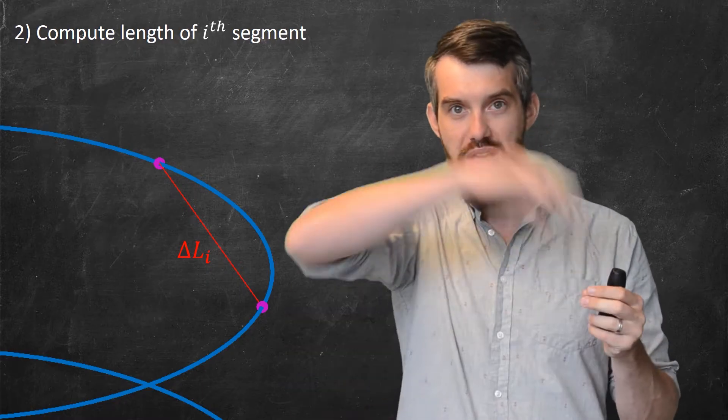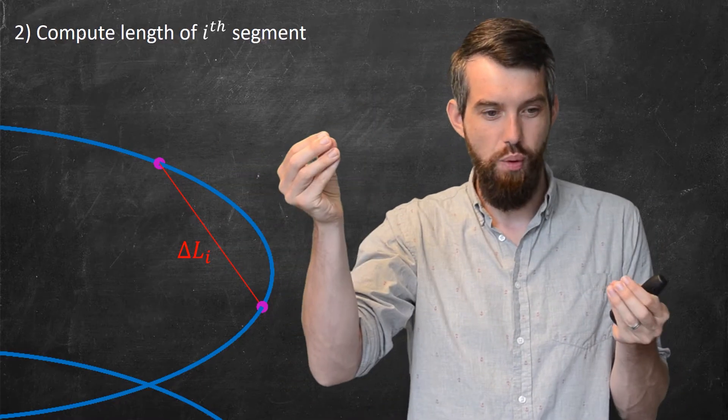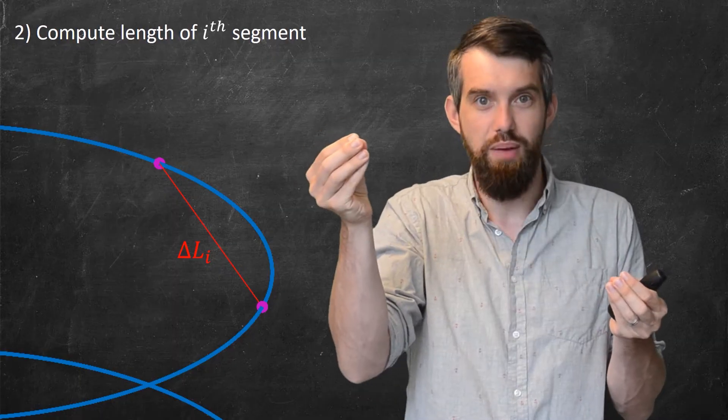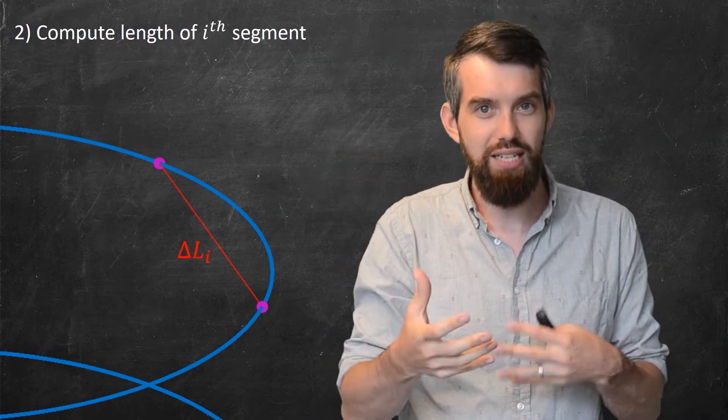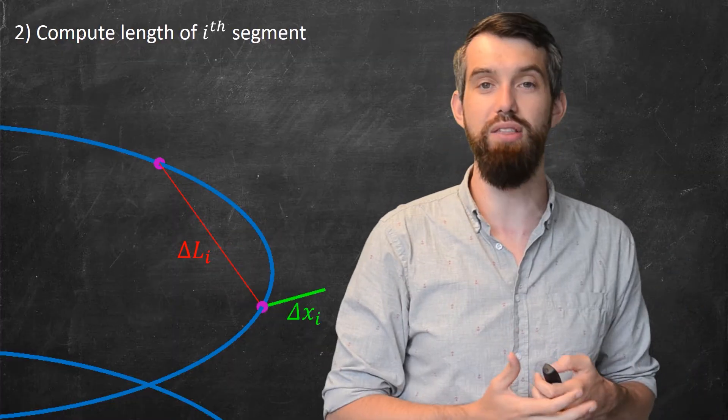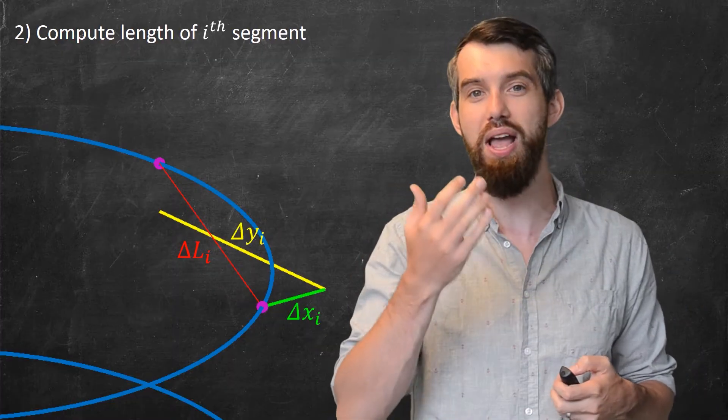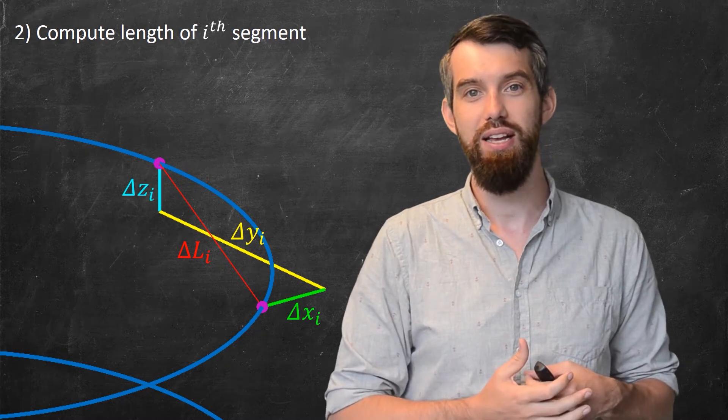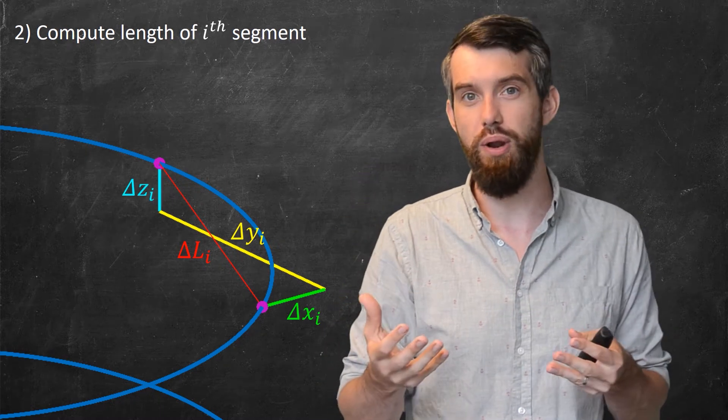Now, if I think about this, I've got my curve. I've got these two different points. I've got the straight line between them. And these two points have a difference in x, in y, and in z. So I can put that on my plot. I can say there's a delta xi, a delta yi, and a delta zi. So my two points differ in all three components.